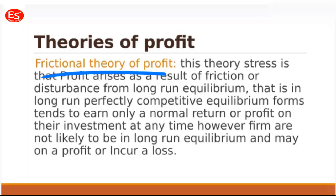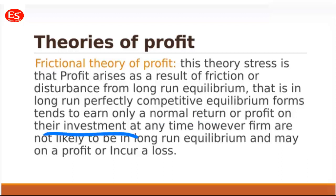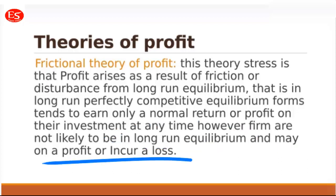The next is the frictional theory of profit, which states that profit arises as a result of friction or disturbances from the long-run equilibrium. In a perfectly competitive long-run equilibrium, a firm tends to earn only a normal rate of return. If there is less friction or disturbance, the firm earns only normal returns; but if a firm is not in long-run equilibrium, it may earn higher profit or incur a loss.